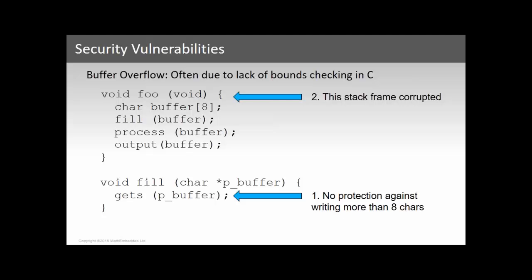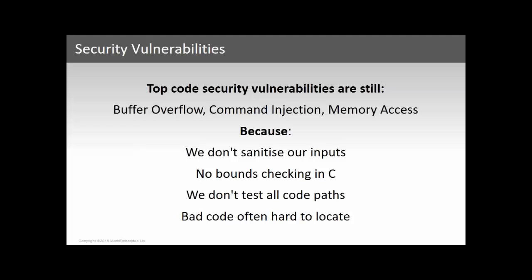Let's look at the biggest one: buffer overflow. It's often due to a lack of bounds checking in C, where the programmer is responsible for not writing outside the bounds of a block of memory. Here's a little example: we've allocated a buffer of eight characters and passed a pointer into a subroutine that uses a now-deprecated function to fill that buffer without checking you won't write more than eight characters. This overflows the memory bounds and corrupts the stack frame, which is the beginning of an attack via modifying the return address.